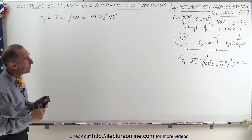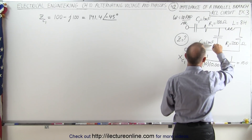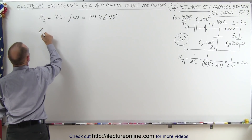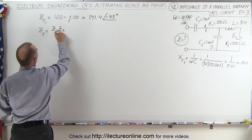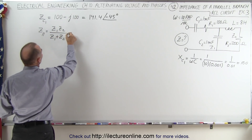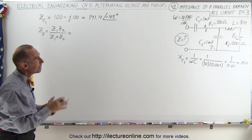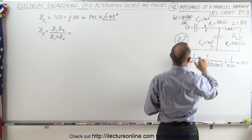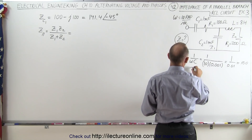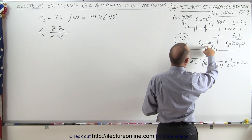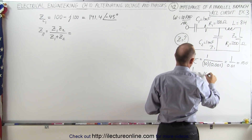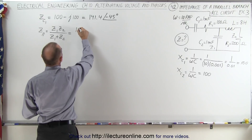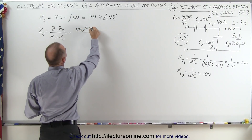Now we attack the parallel branch. We'll call the left branch Z1 and the right branch Z2. The impedance of the parallel combination equals Z1·Z2 divided by (Z1 + Z2). For Z1, X_C2 equals 1 over omega·C, and since that capacitor is the same size as C1, it also equals 100. Since there's no real part, Z1 has an amplitude of 100 with a phase angle of minus 90 degrees.